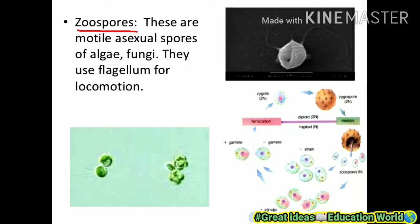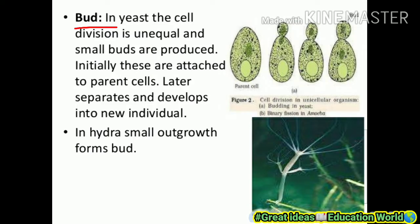Next, we see zoospores. These are motile asexual spores of algae and fungi. They use flagella for locomotion — flagella are present for the locomotion of zoospores. Examples: algae and fungi. Next is budding. In yeast, the cell division is unequal and small buds are produced initially. These are attached to the parent cell. Later, they separate and develop into new individuals. In hydra, small outgrowths form buds. The parent hydra develops and produces a small bud, which grows further.